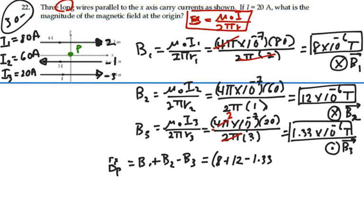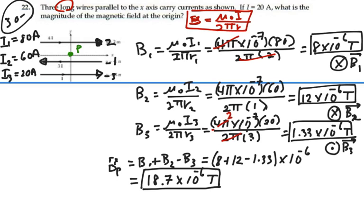So this is going to be equal to 8 plus 12 minus 1.33, all this times 10 to the minus 6. So that's going to be 20 minus 1.33 or 18.67, 18.7 times 10 to the minus 6 tesla. And the predominant direction of that then would be into the page as we've drawn it. So my answer for the magnetic field at the origin is 18.7 micro tesla into the page.